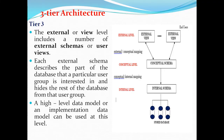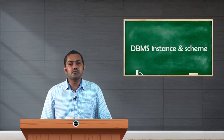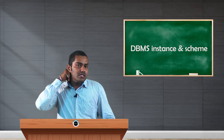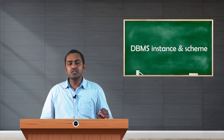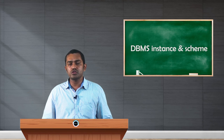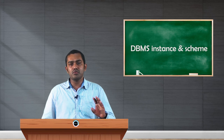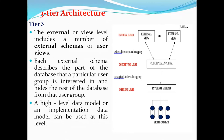The third tier is the external level, which represents the client side. Each user or client may access the database simultaneously with different needs. The server processes each request depending on the request format. The external or view level includes a number of external schemas or user views. Each external schema describes the part of the database that a particular user group is interested in and hides the rest of the database from that user group. The user only knows the information relevant to their request — where to send information — while details like storage structure remain hidden.